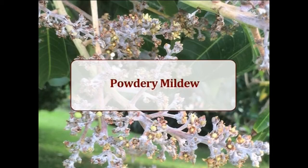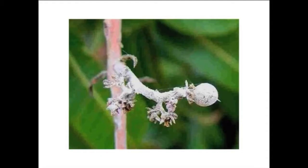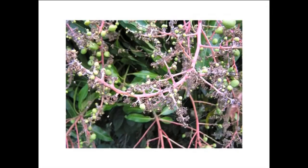The next disease is powdery mildew. The pathogen shows whitish to grayish powdery growth on tender leaves and inflorescence. Infected floral parts may drop off prematurely, and the axes become dry, showing die-back symptoms.